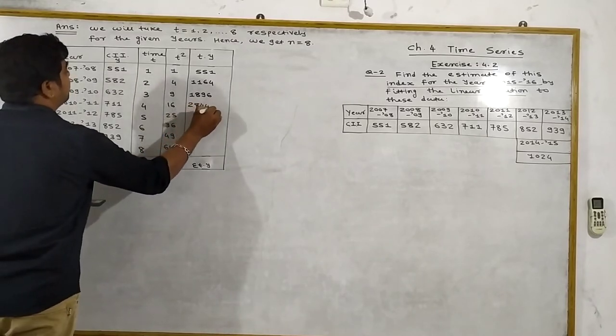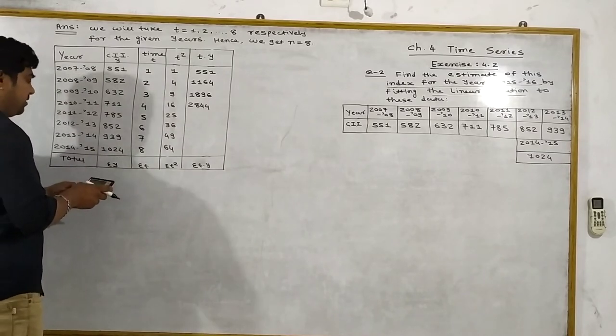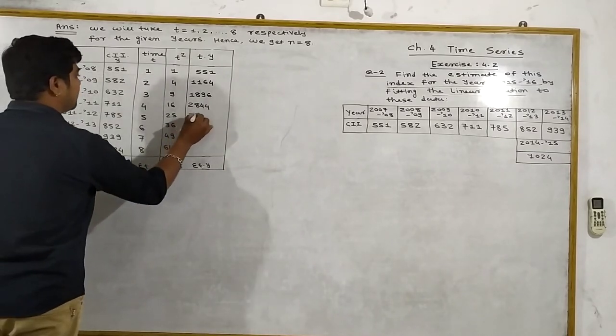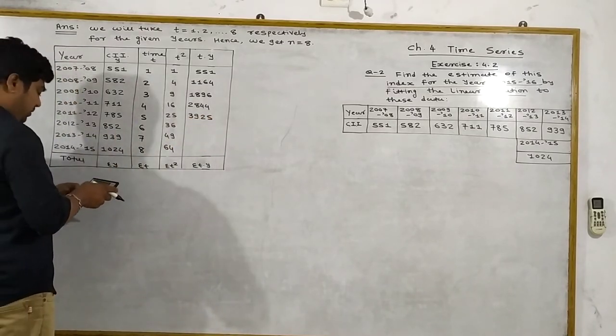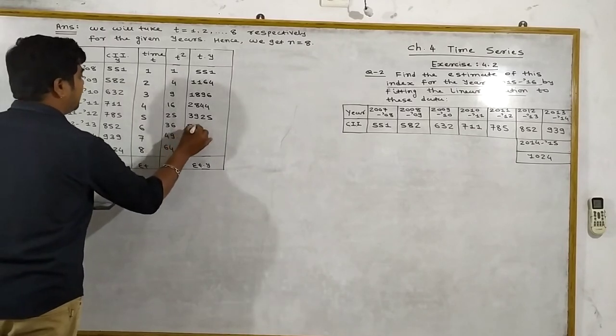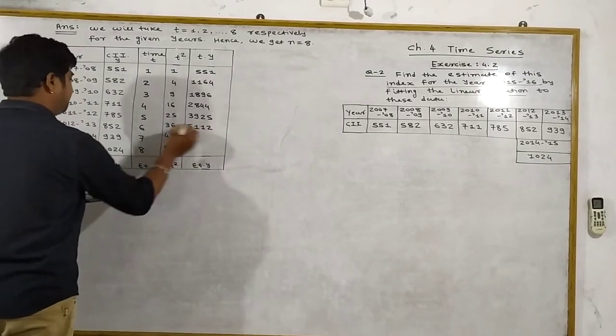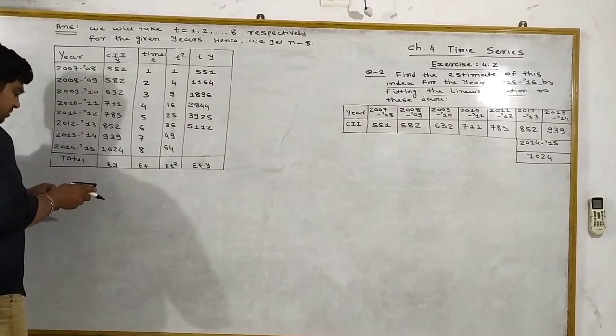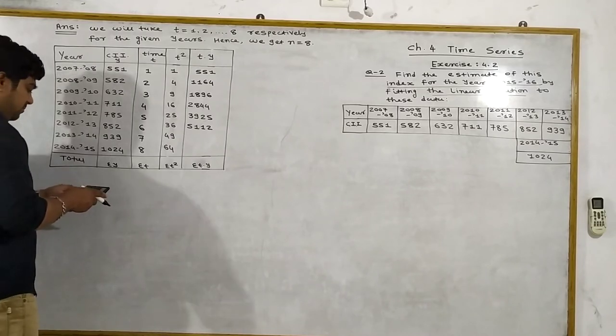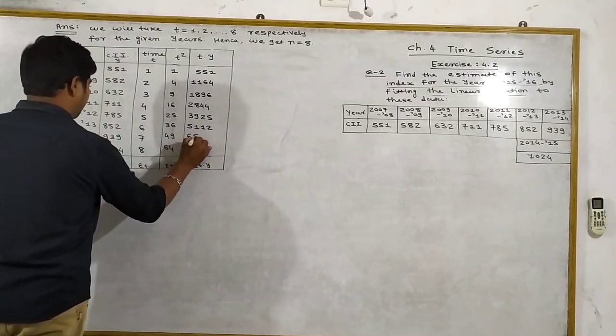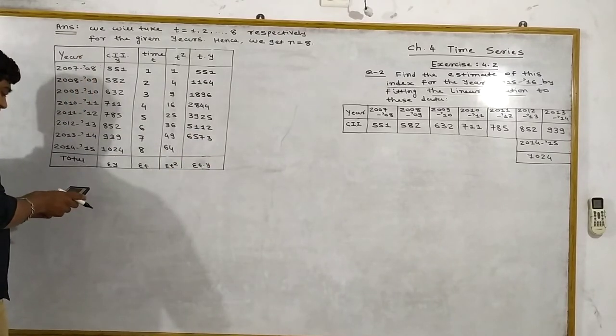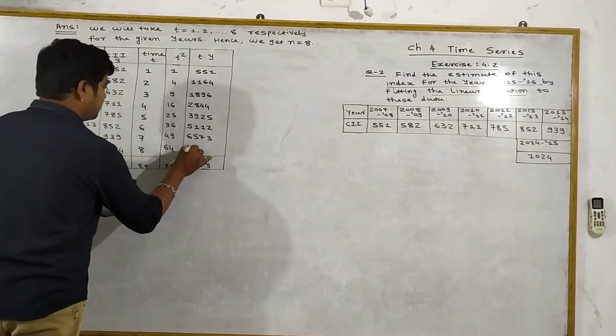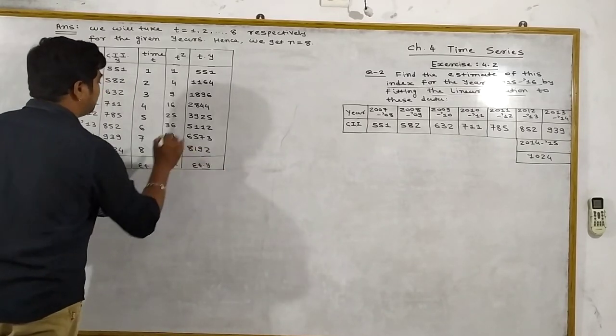785 times 5 equals 3925. 852 times 6 equals 5112. 939 times 7 equals 6573. 1024 times 8 equals 8192.